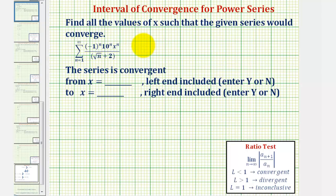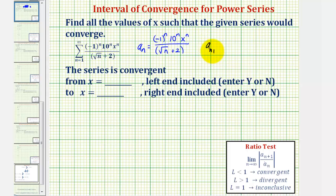Before we apply the ratio test, notice that a_n would be equal to negative one raised to the power of n, times ten to the nth, times x to the nth, divided by the square root of n plus two. And for a_{n+1}, we would have negative one to the power of n plus one, times ten to the power of n plus one, times x to the power of n plus one, divided by the square root of n plus one plus two.